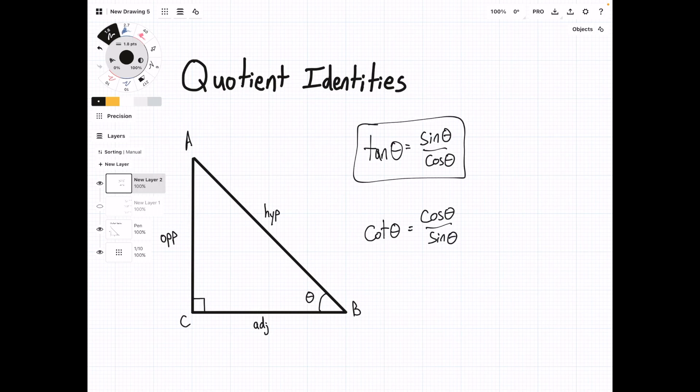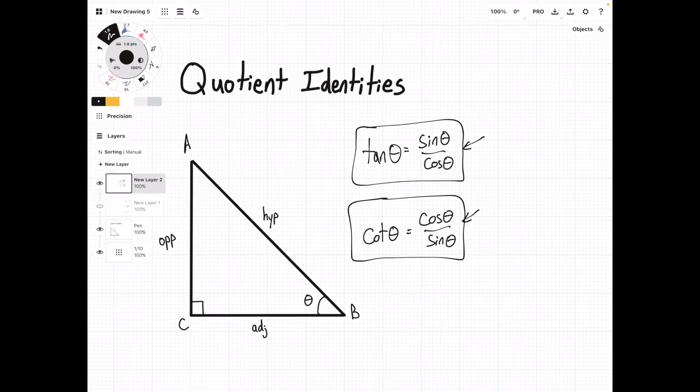I'd seen these quotient identities on the internet and thought it was something more involved, but really it's just the ratio of sine to cosine and cosine to sine. To make this a little bit more involved though, we can prove this using SOHCAHTOA.